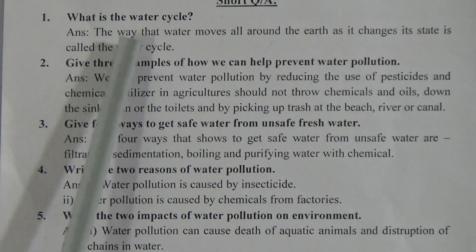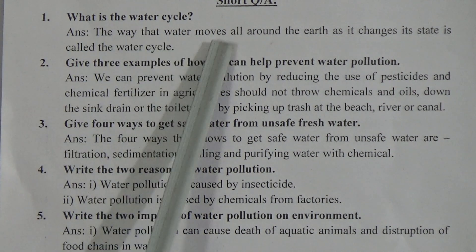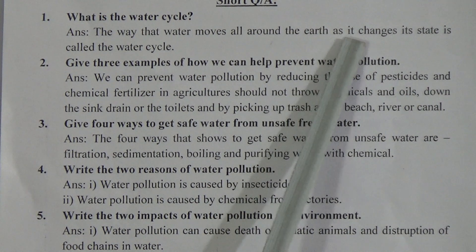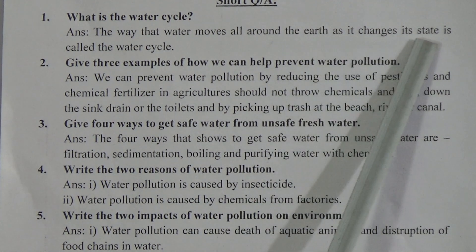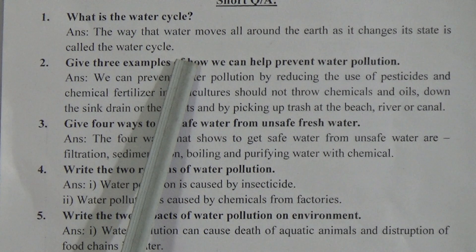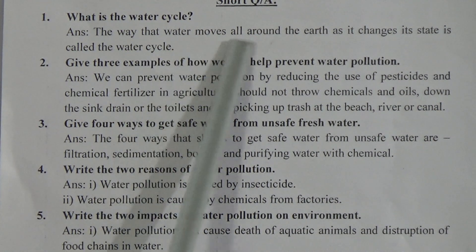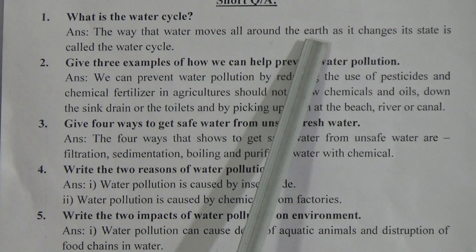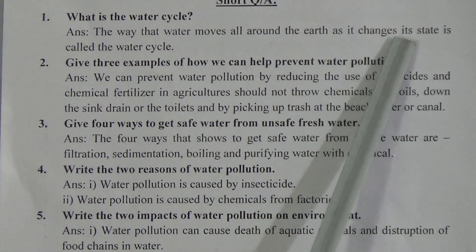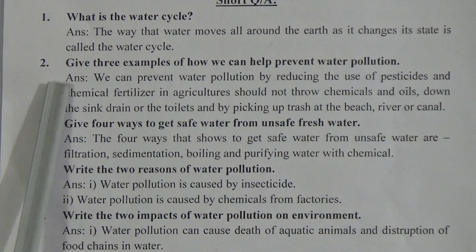Short question number 1: What is the water cycle? The way that water moves all around the earth as it changes its state is called the water cycle.